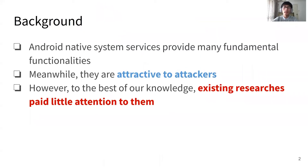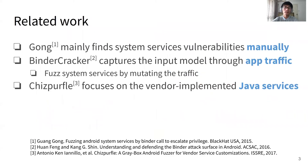Android native system services provide many fundamental functionalities. Meanwhile, they are attractive to attackers. However, to the best of our knowledge, existing researchers pay little attention to them. Prior work mainly finds system service vulnerabilities manually. Bandcracker captures the input model through app traffic and fuzzes system services by mutating the traffic, but its focus is on vendor-implemented web services.